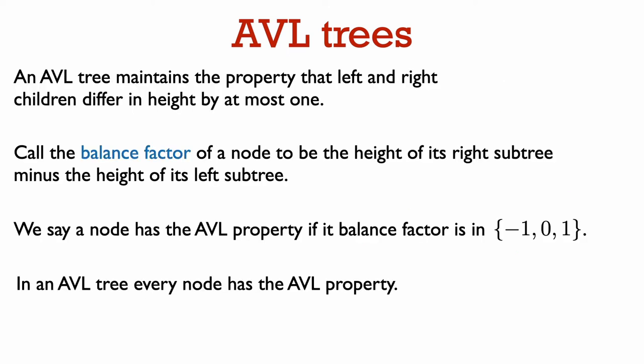AVL trees maintain a very strict balance property. For every node, they mandate that the height of that node's left and right child differs by at most one. Let us call the balance factor of a node to be the height of its right subtree minus the height of its left subtree. It doesn't matter if you use right minus left or left minus right, but we will take the convention that the balance factor is the height of the right subtree minus the height of the left subtree. We say that a node has the AVL property if its balance factor is either minus one, zero, or one. And in an AVL tree, every node must have the AVL property.